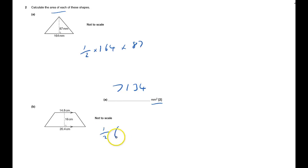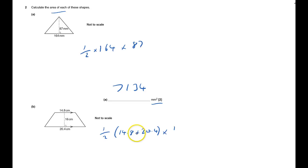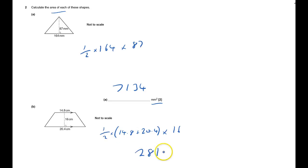It's a half of (a plus b), so it's 14.8 plus 20.4, times by the distance between them, 16. Again, half of that — 'of' means times. Some calculators will do it anyway. The answer is 281.6 centimeters squared, and that's question two done.